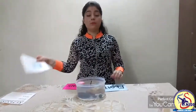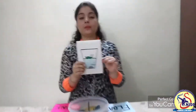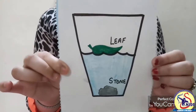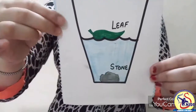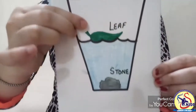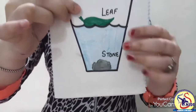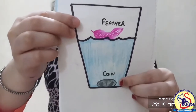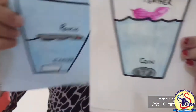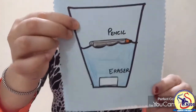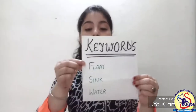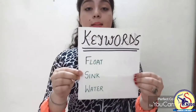Now we will go through a quick recap with the help of these pictures. Things which are light in weight float on water and things which are heavy in weight sink in water. Leaf floats on water. Stone sinks in water. Feather floats on water. Coin sinks in water. Pencil floats on water. Eraser sinks in water. So you have learned three keywords today: float, sink, water.